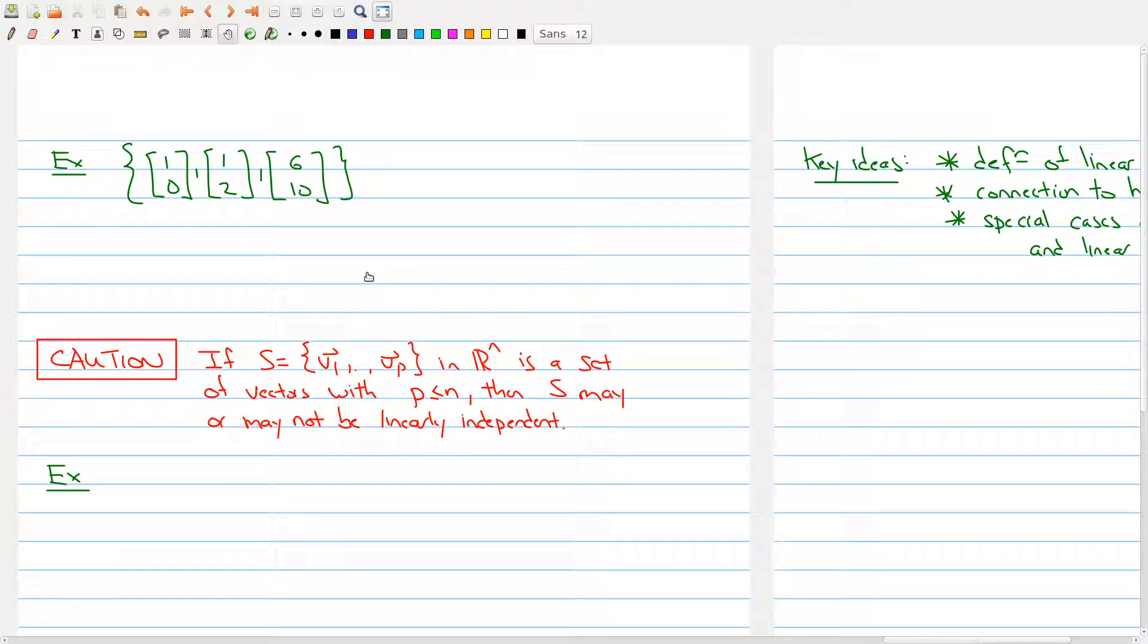We could have just said, oh, I have three vectors in R2, so it has to be linearly dependent. So, linearly dependent. Since P is 3, which is greater than 2, which is the number of entries in each vector. So, I automatically know that it's linearly dependent.